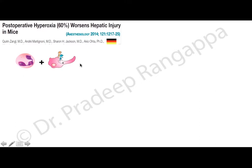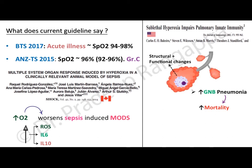A study from a German group found that neutrophils along with Kupffer cells lead to activation of oxidation within the tissue, causing tissue injury. These physiological and animal models showed that at the cellular level, oxygen can be deleterious — affecting alveolar cells through oxidation and tissue injury, and worsening sepsis-induced multi-organ dysfunction via release of interleukins and reactive oxygen species.